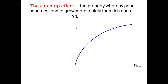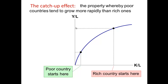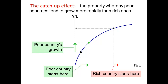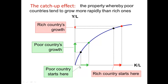When we talk about the catch-up effect, we use the same graph. Basically what we find is that a poor country will start here and a rich country will start here. We give both countries the same amount of input, but the poor country's growth is larger than the rich country's growth. That's the catch-up effect — when a poor country is given resources, it allows them to grow and be more productive, which will spark growth.